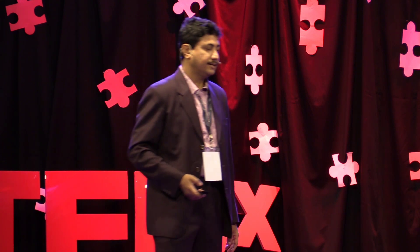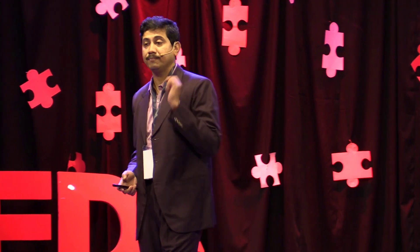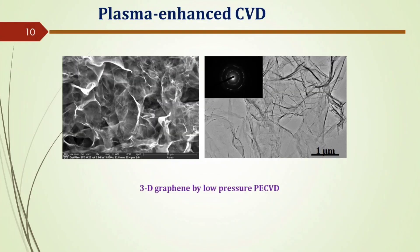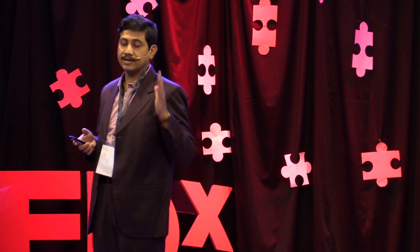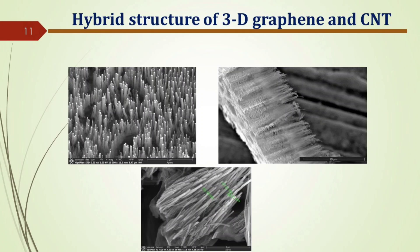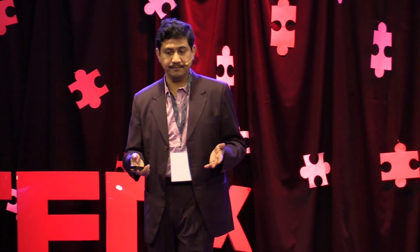Another very important process for making nanoparticles is plasma-enhanced chemical vapor deposition. As I mentioned, graphene is a two-dimensional structure, but we need to use it in three dimensions as well. A three-dimensional graphene can be made using low-pressure plasma-enhanced CVD. We can also make a hybrid structure where three-dimensional graphene forms the base and vertically aligned carbon nanotubes grow on top. These structures have very high surface area, making them useful for energy storage and sensor applications.